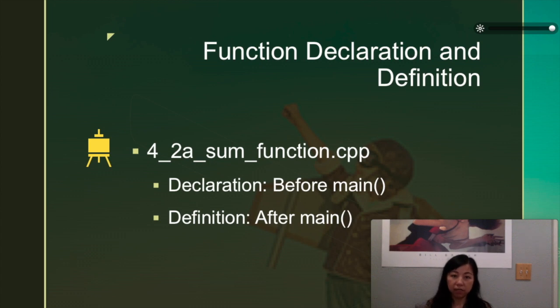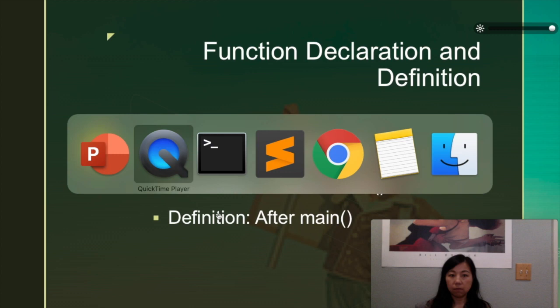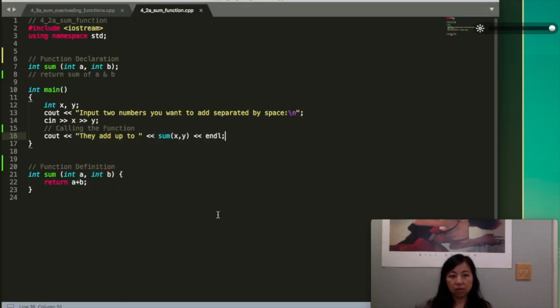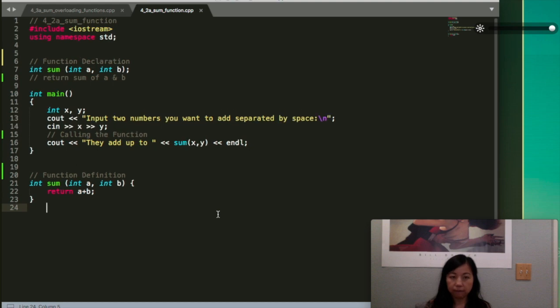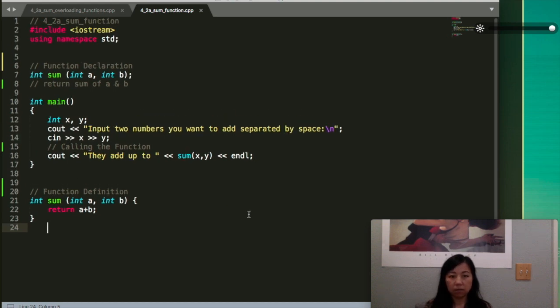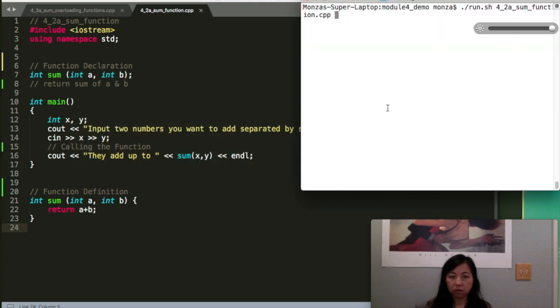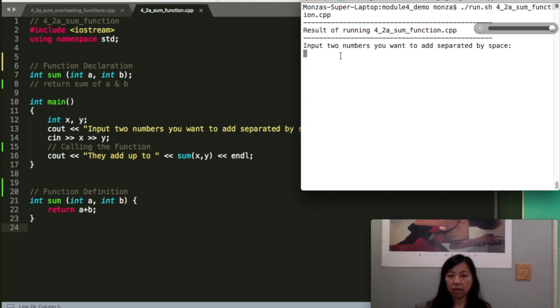So let's see how we can define our own functions. I just thought, seeing how it works is actually so much easier than explaining it in words. So let us see how we run this program first. When we run this program, it will say, hey, input two numbers you want to add separated by space. Don't worry about this part. I'm using a script to run this program.